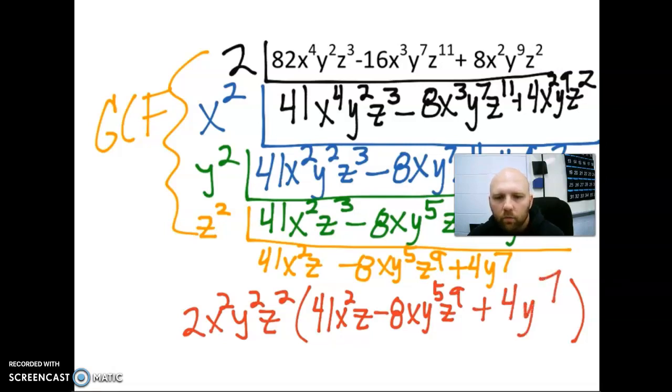And what we've done here, when we talk about factoring, we really talk about this idea of undistributing or unmultiplying. In this case, we have unmultiplied our original expression, and we can't unmultiply that any more. Therefore, we have factored the greatest common factor out of our expression that we started with. Thank you.